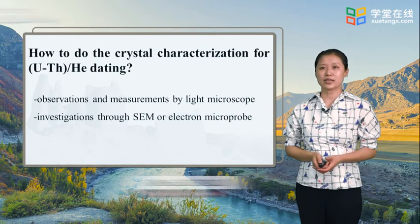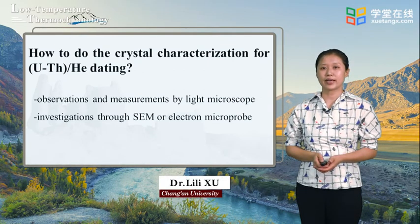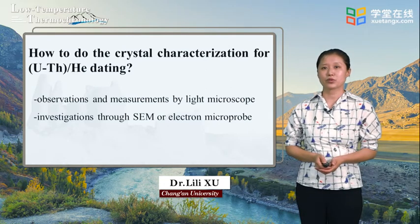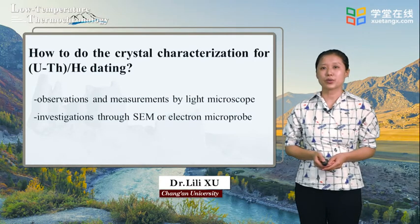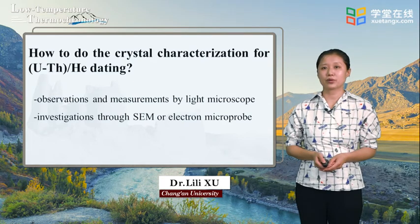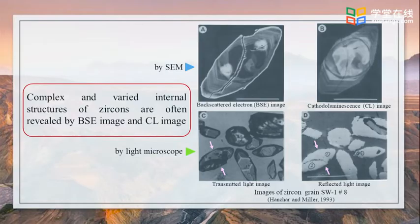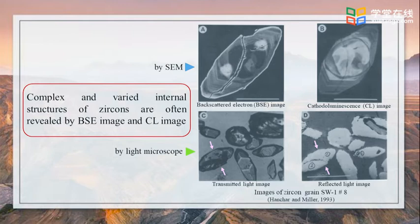How do we do crystal characterization for uranium-thorium-helium dating? Generally, the characteristic morphology and size of each crystal can be observed and measured by light microscope. Details about internal structures of the crystal are investigated through scanning electron microscope or electron microprobe. These are images of one zircon grain by scanning electron microscope and light microscope, respectively. The backscattered electron image is principally used to reveal compositional variations. In Figure A, a distinct inner core (dark gray), an outer core, and fine-scale oscillatory zoning are revealed.